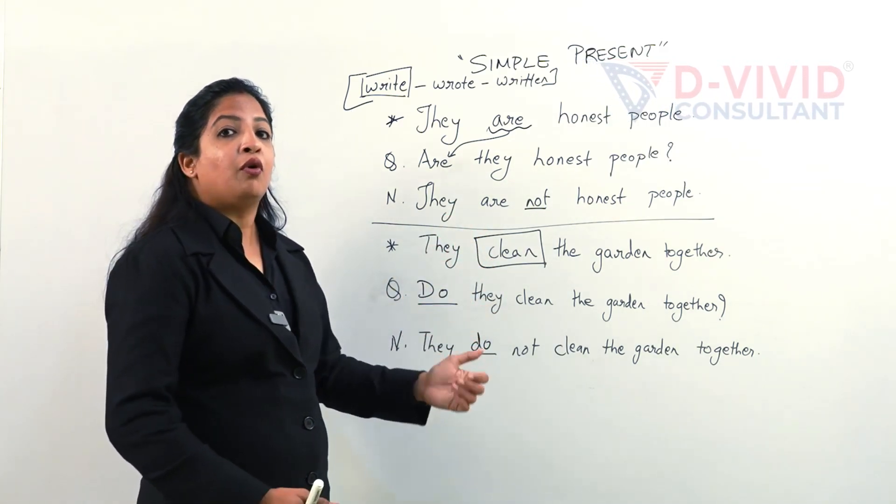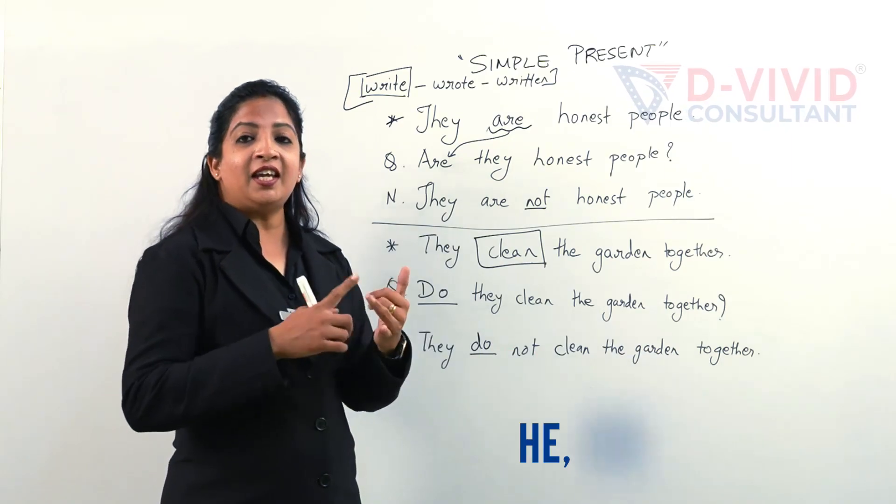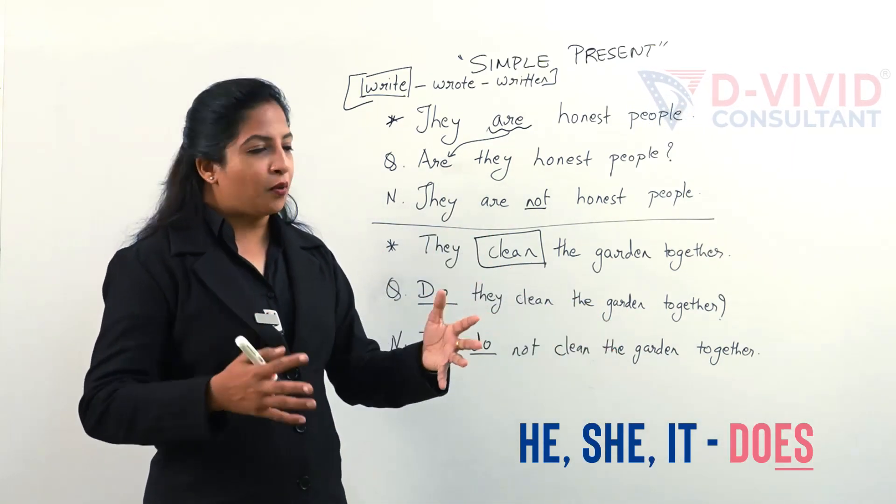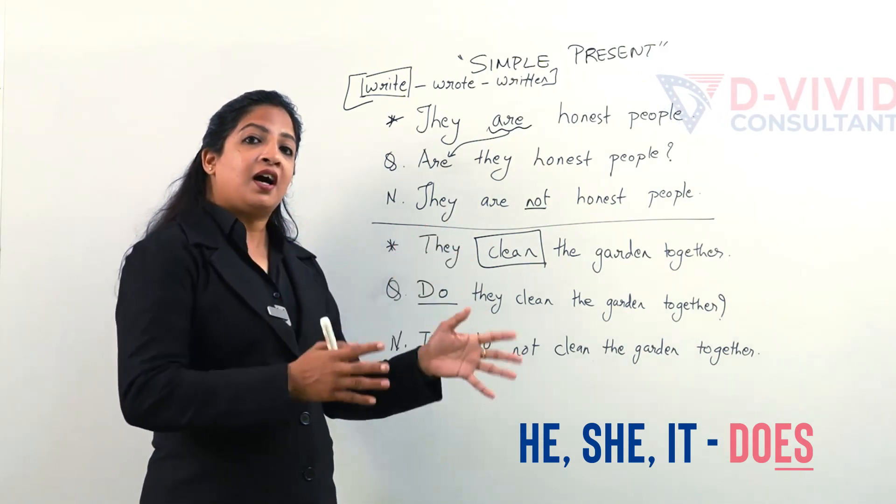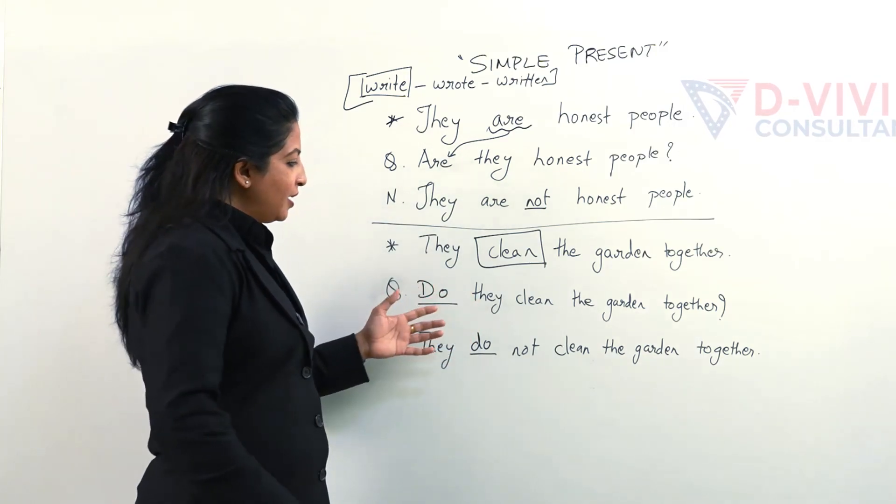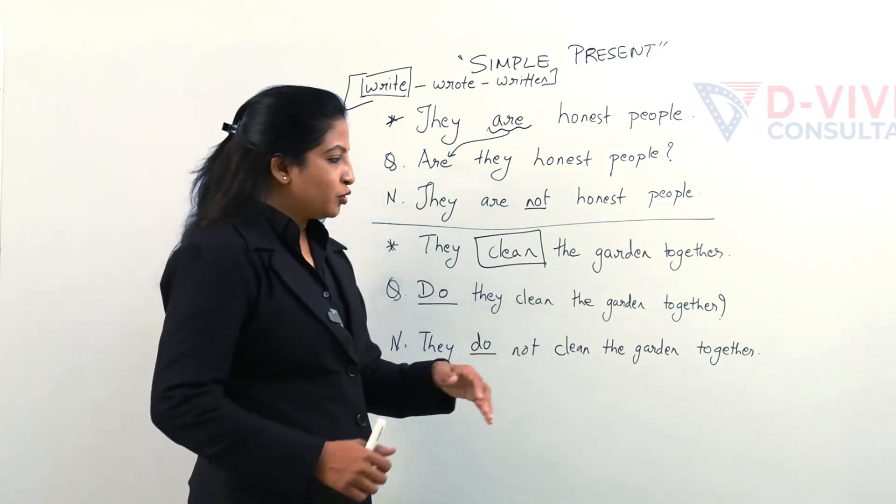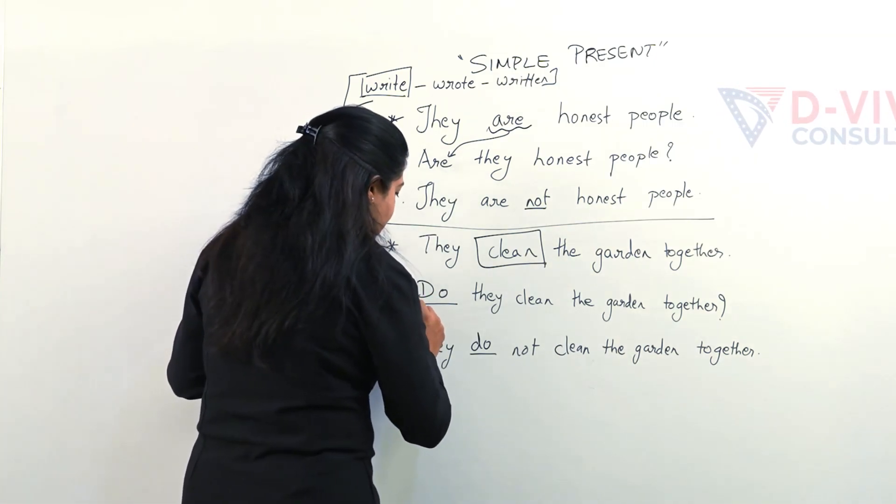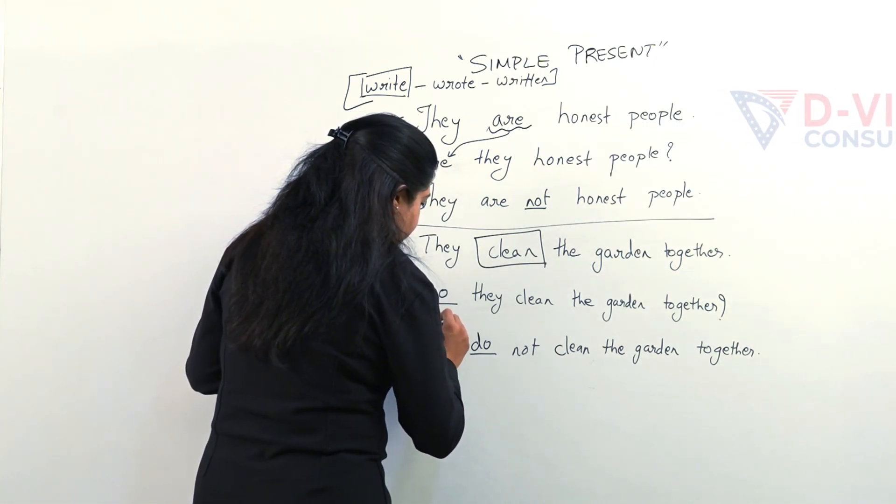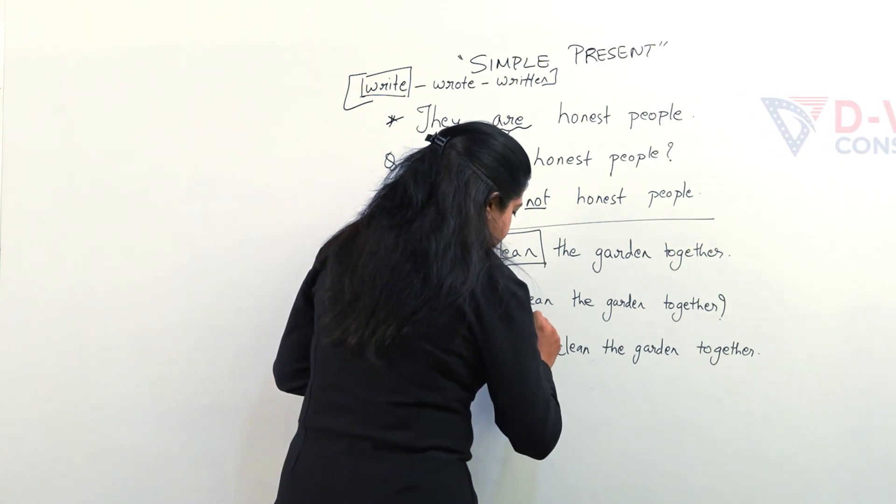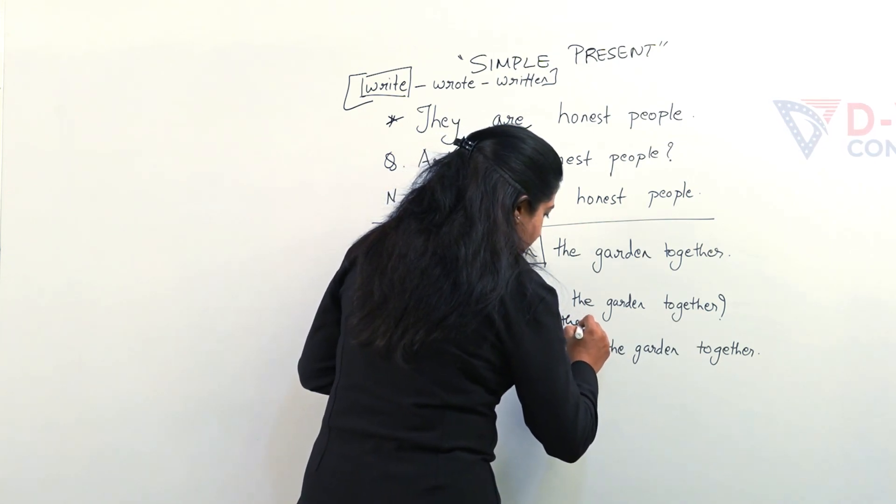So whenever you are targeting the action verb specifically in simple present tense, then this sentence is incapable to convert itself into question or negative. And hence you need to borrow do. And with the help of do or does, if we have he she or it, we are going to use does. So if I'm having he or she, it will look does he clean the garden.